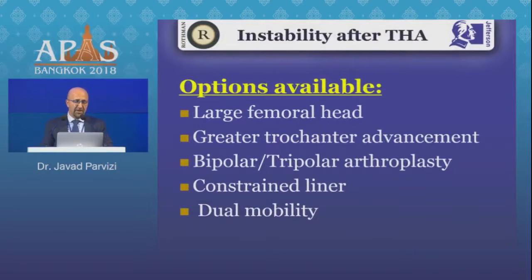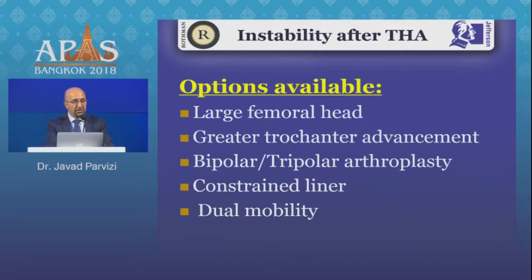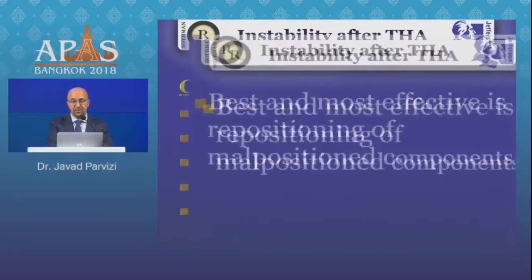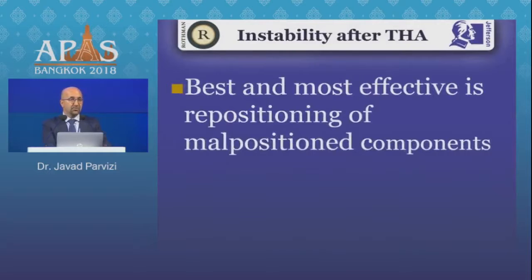So what are the options available? Large femoral head, greater trochanter advancement — which is not done very often these days — bipolar and tripolar, constraint liners, and dual mobility. I would say dual mobility is probably one of the most popular options at the moment, and in my opinion a great option for patients with recurrent instability.